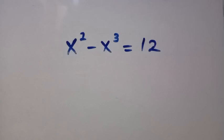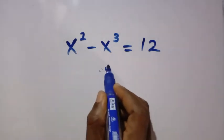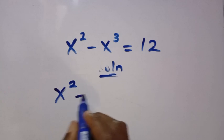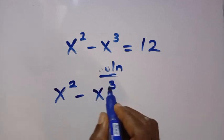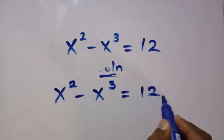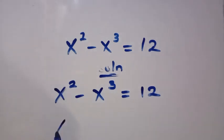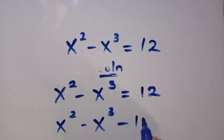Hi champions, you are welcome. Let's solve these nice algebraic equations: x squared minus x cubed equals 12. Considering the solution from the given question, we have x squared minus x cubed equals 12. Taking 12 to this side, we have x squared minus x cubed minus 12 equals 0.